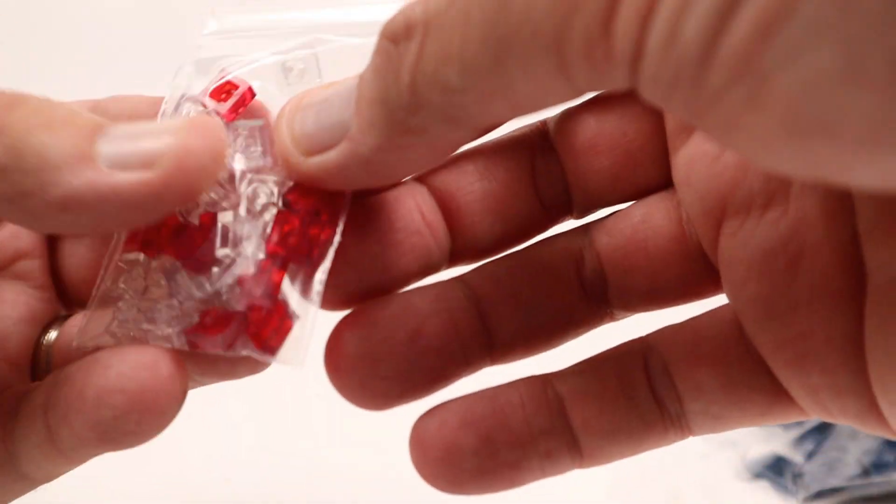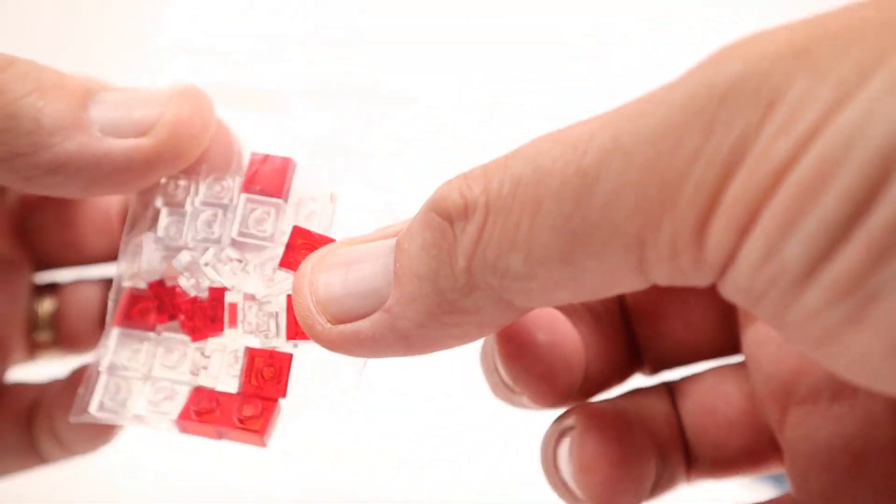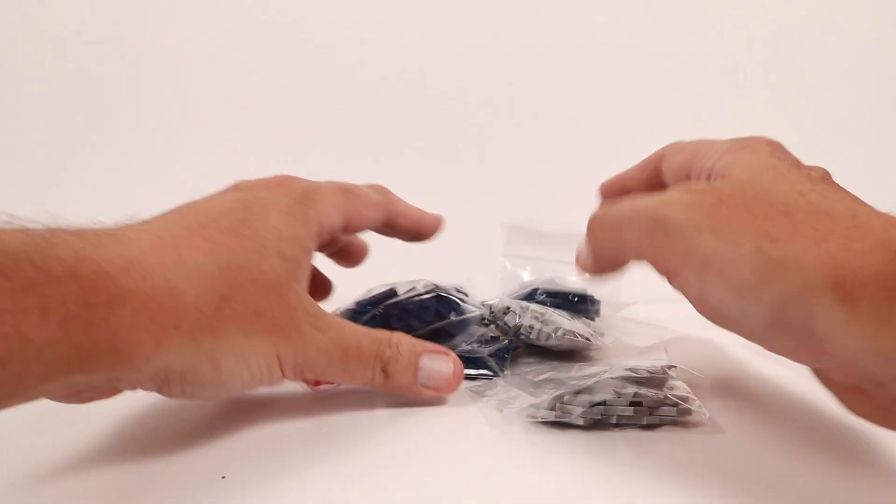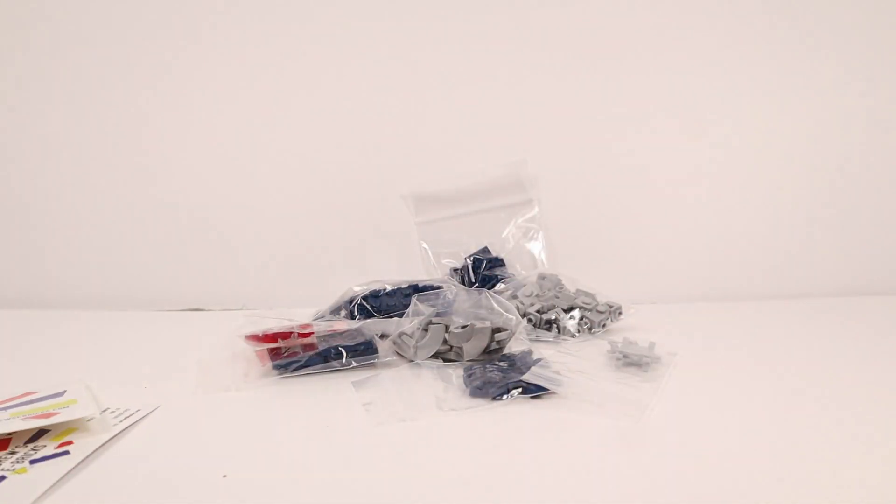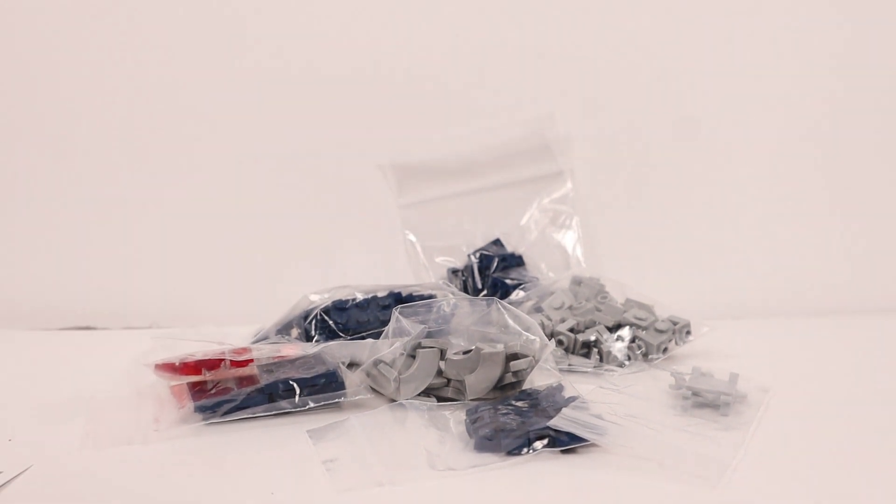And then finally, and we've been running low on these. These are one by one translucent clear and translucent red pieces. So not a giant haul, but all pieces and detailed pieces that we need for Hoth.